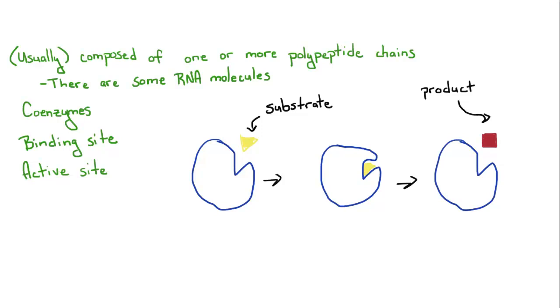Enzymes are normally composed of one or more polypeptide chains. This means they are normally proteins. However, there are some RNA molecules that act as catalysts. Anyways, the basic structure of an enzyme is you've got your binding site, you've got your enzyme here, you've got the binding site there, and then you've got the active site.